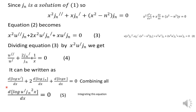This can be written as d/dx[log(u')] + 2·Jn'/Jn + 1/x = 0. Integrating, the term 2Jn'/Jn integrates to log(Jn²) and 1/x integrates to log(x). So we get log(u') + log(Jn²) + log(x) = log(c₁).